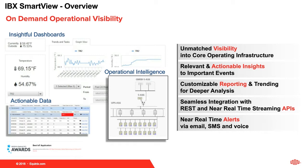IBX SmartView provides unmatched visibility to core infrastructure at the data center, including environmental data from an IBX level down to a cabinet level, power draw data at a circuit level rolled up to cage and cabinet levels, and real-time operating status of the cooling and electrical plants. IBX SmartView also provides users with the ability to configure real-time push notifications, allowing customers to be proactive during important events such as when utility power goes out or temperature spikes in their cage.